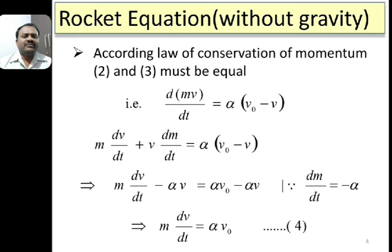Expanding d/dt(mv) gives m × dv/dt + v × dm/dt = alpha × (v0 − v). Now dm/dt represents the rate of change of mass of the rocket, which equals the rate of burning of fuel. Since mass is decreasing, dm/dt = −alpha. Substituting, we get m × dv/dt − alpha×v = alpha×v0 − alpha×v. The −alpha×v terms cancel on both sides, giving m × dv/dt = alpha × v0. This is equation 4.